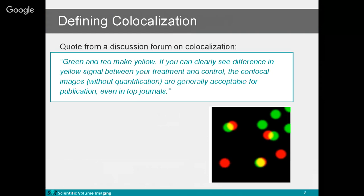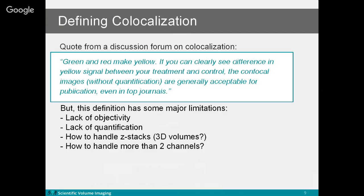Of course, we all wish experiments and analysis were that straightforward, but there are more questions and obstacles to overcome. This statement is very subjective — we cannot quantify our results. Also, cell cultures are not truly two-dimensional; they're three-dimensional. What if there's a third channel that influences our observation? This is why we need a scientific analysis approach to quantify results.